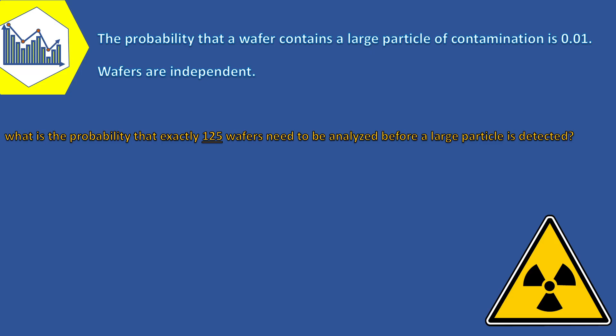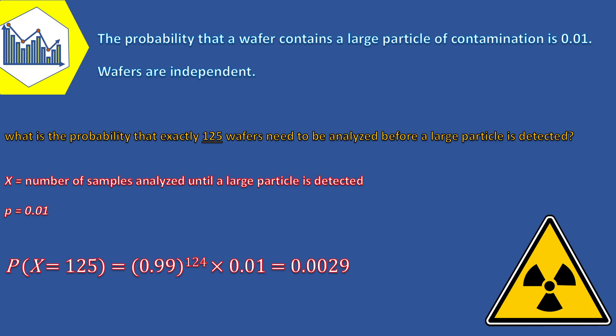Let X denote the number of samples analyzed until a large particle is detected. Then X is a geometric random variable with p equals 0.01. So the requested probability is 0.99 to the power of 124 times 0.01, that is 0.0029.